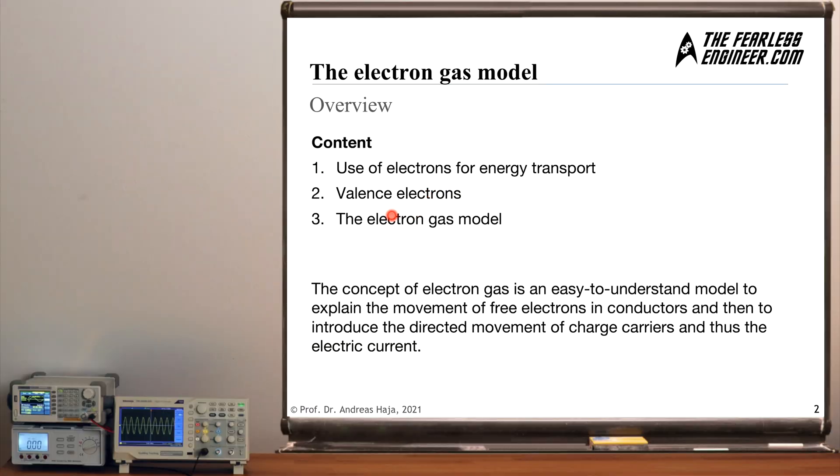In order to understand the concept of electron gas and arrive at the definition of an electron gas model, we first need to understand how electrons can be used to transport energy into a circuit and we also need to understand what valence electrons are. And if we have completed both steps, we can then arrive at a sound definition of electron gas and we can also find out how we can use this model to explain the concept of current flow and thus electric current.